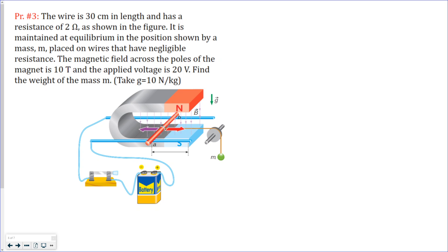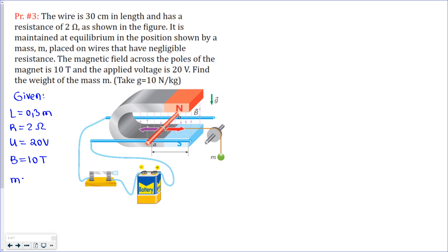Now let's go to the third problem. It can be a bit more complex, but after we write the given values you'll see it's not so complex. The length of the wire is 0.3 meters, the resistance of the wire is 2 ohms, the voltage at the ends of the wire is 20 volts, the magnetic field strength is 10 tesla, and gravity is 10 N/kg. We need to find the mass of the ball. This is the side view of the wire.